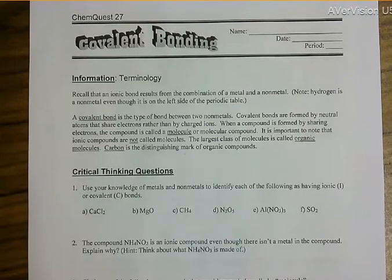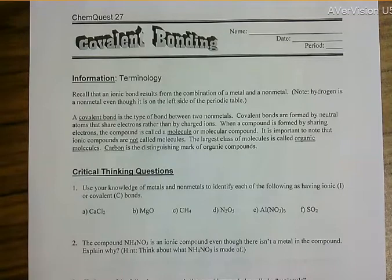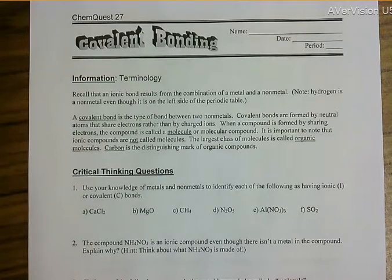Rather than by charged ions, when a compound is formed by sharing electrons the compound is called a molecule or molecular compound. It is important to note that ionic compounds are not called molecules. The largest class of molecules is called organic molecules — carbon is the distinguishing mark of organic compounds.